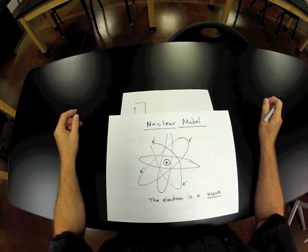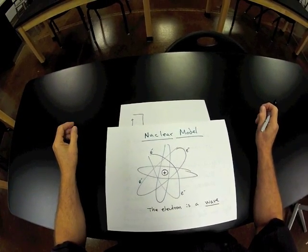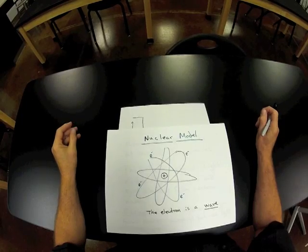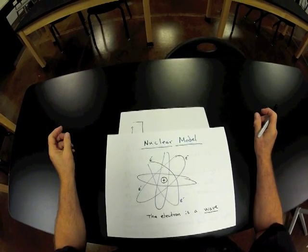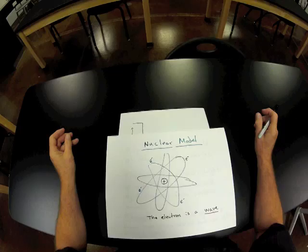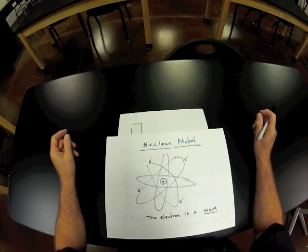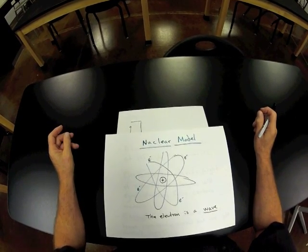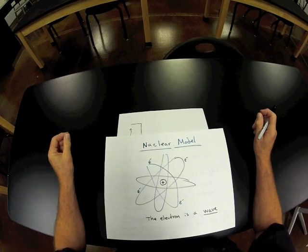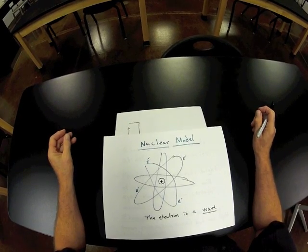The purpose of this short video is to describe the development of the Bohr model. When Niels Bohr developed his model of the hydrogen atom, it was in the early 1900s, and at the time of his proposal...